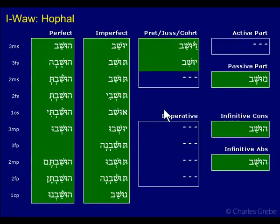So what do we have in the hofal? For first vav, we have the vav showing up everywhere, just like the hiphil, and just like the nifal. In the nifal you saw the first vav everywhere. In the qal you didn't see it anywhere. Also, like the hiphil, you see the first vav showing up as a vowel everywhere.